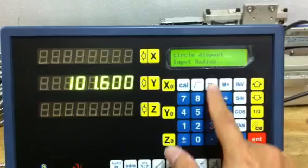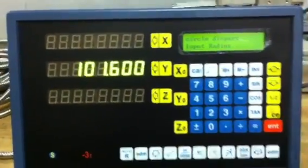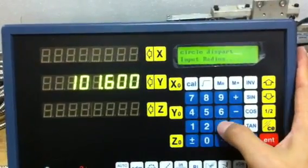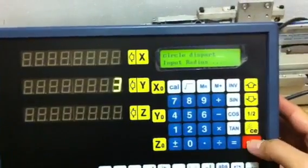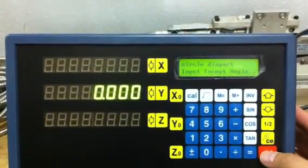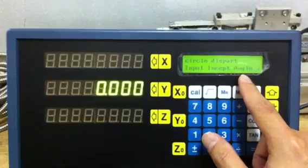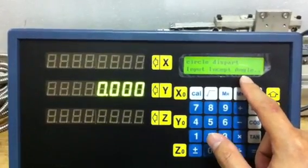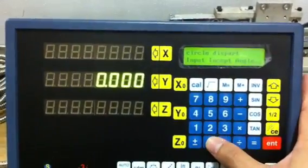First, it prompts you to key in the radius of the circle. Let's say radius is 3 inch. And input the incept circuit angle. That is the starting angle. Let's say it's 0.